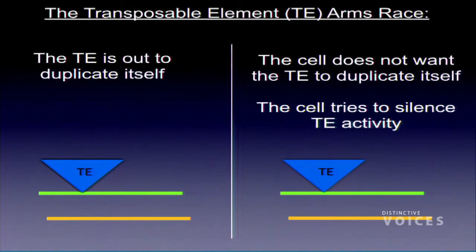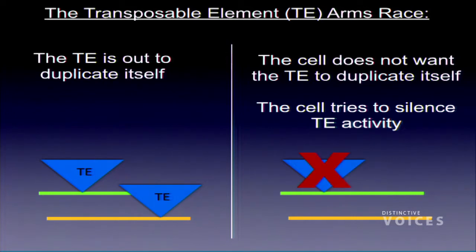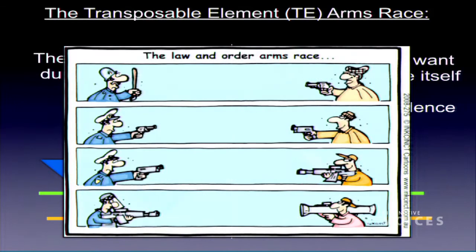The arms race I work on: I think of the transposable element as the robber. It wants to jump to all corners of your genome and occupy as much as possible. The cell doesn't want that — it's inherently mutagenic — so the cell works hard to silence transposable element activity. The cell can't erase the transposable element from the genome, but it can stop it from jumping around, making it latent. We can pass silenced or dead transposable elements through generations without a problem. The problem comes when they're active.